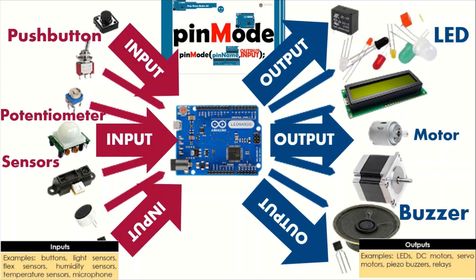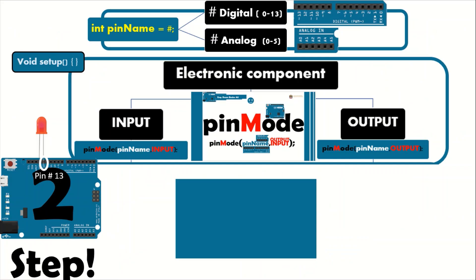The difference between input and output: input is anything you use your hand on or anything that collects data from the environment — like a push button or sensors. Output is everything you can see or perceive as a result — like an LED showing light, a motor running, or a buzzer making sound. Those are the things considered as output.